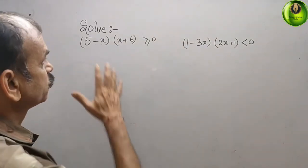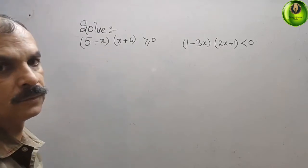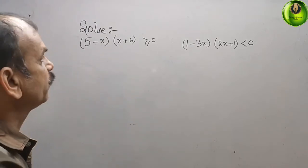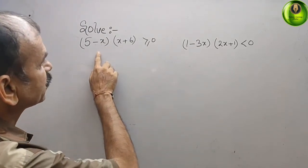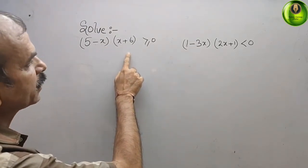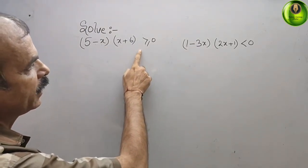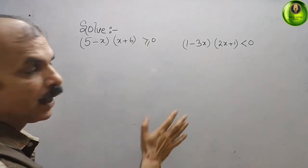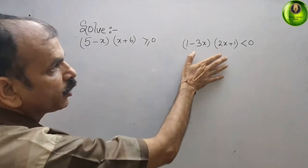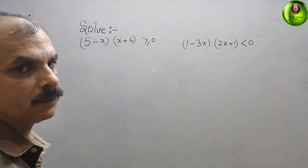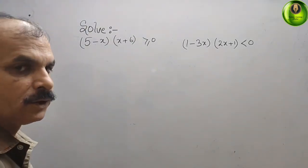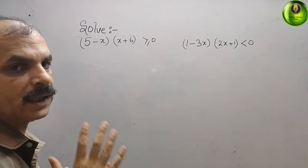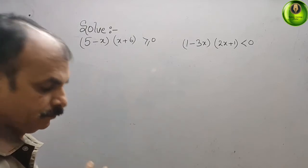The question is: solve (5 minus x)(x plus 6) is greater than or equal to 0. There is also a second question. We will understand them one by one.